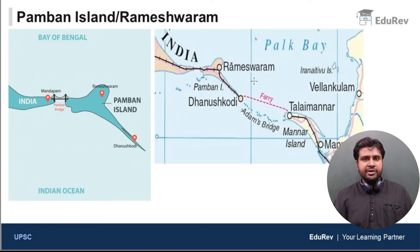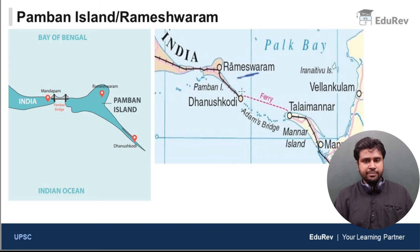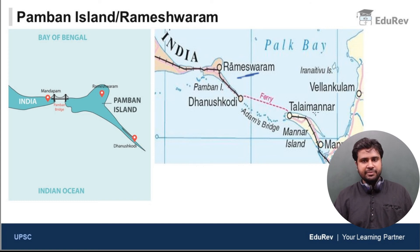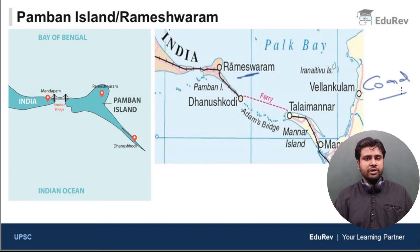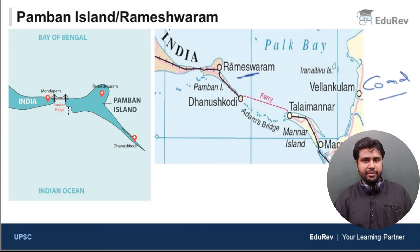Next, we have the Pamban island or the Rameshwaram island. The Pamban island also has a coral origin. This is where the Pamban island is located — between the Indian mainland and Sri Lanka. It is a coral island, and it is connected to mainland India with a famous bridge, the Rameshwaram bridge.